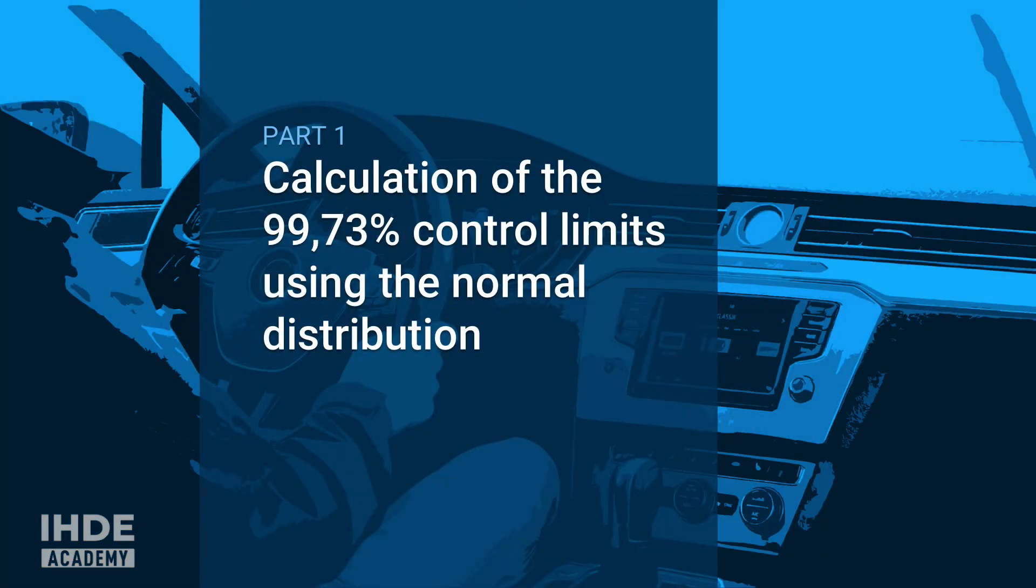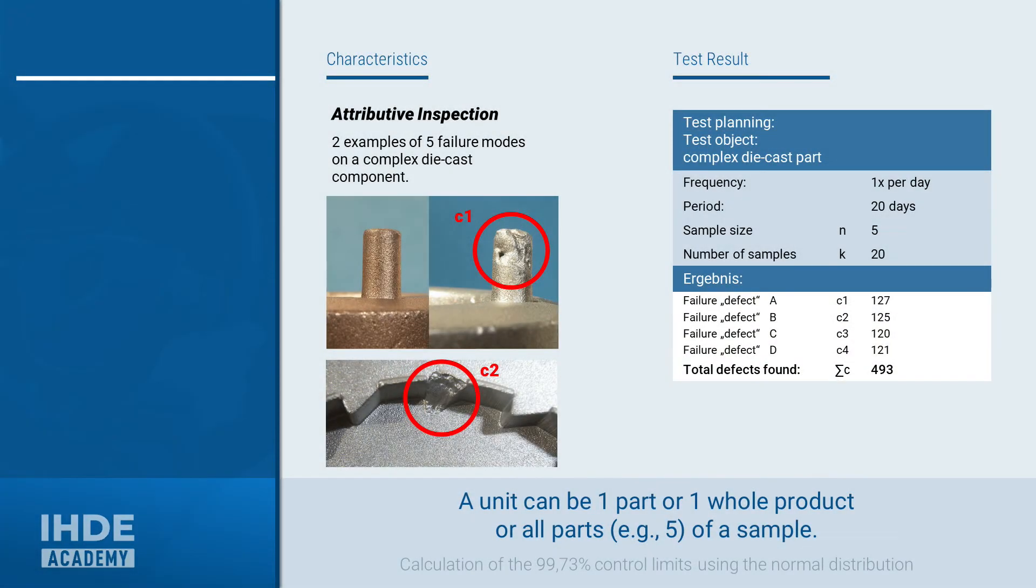Let's start with the calculation of the control limits. A unit can be one component or the whole product or all parts, for example, five of a random sample. The sample size can be variable. As an example of a unit, we shall use the sample of a die-cast part. Let's assume that this is sufficiently complex to be able to show numerous different defects.